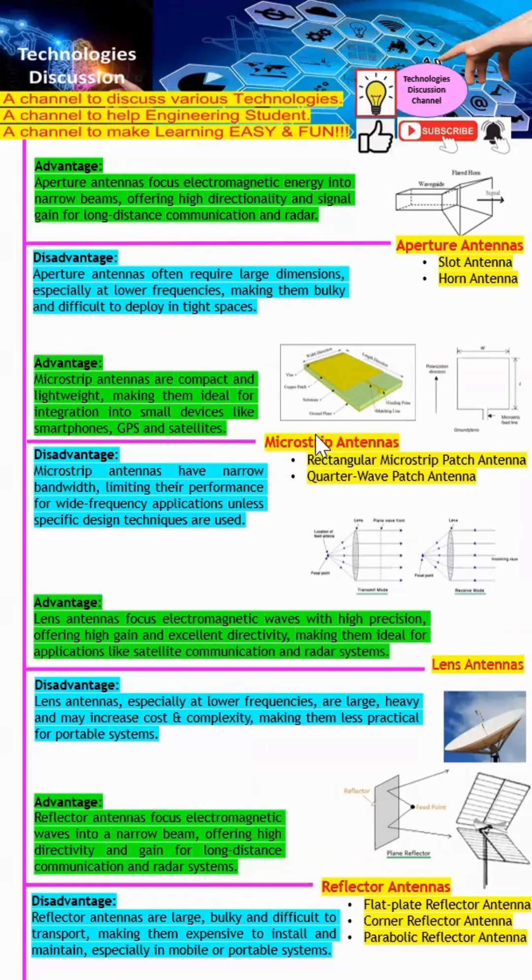The next one will be microstrip antenna. Microstrip antennas are very small, compact, and lightweight, so they are widely used in small portable devices. However, microstrip antennas have very narrow bandwidth, which becomes a big issue when applications require wide frequency coverage.